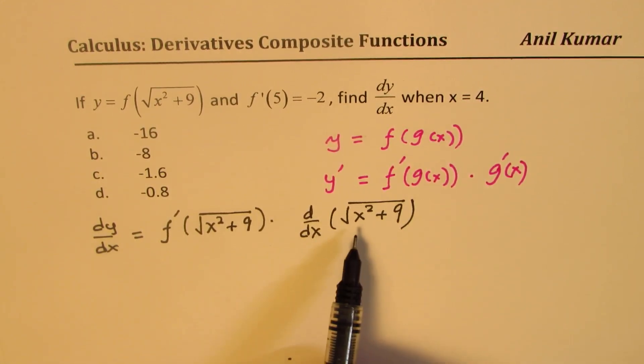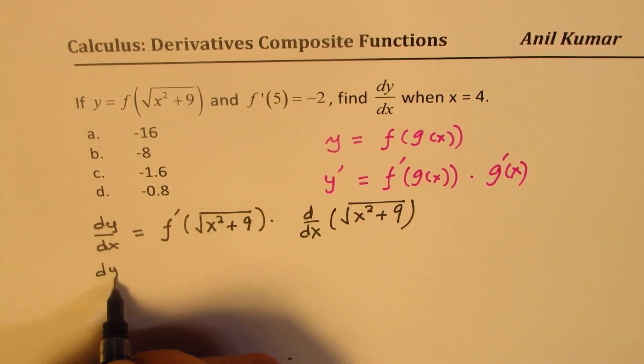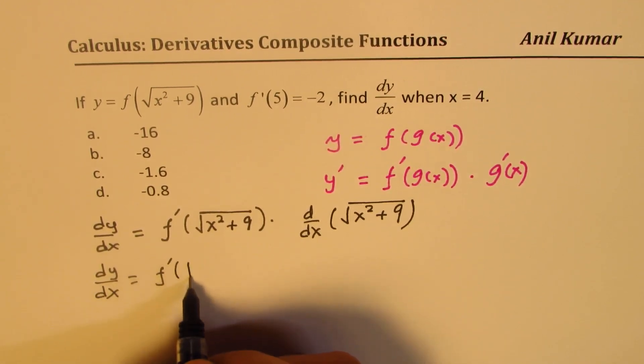Now, we know what the derivative of x squared plus 9 is. Let's do that first.